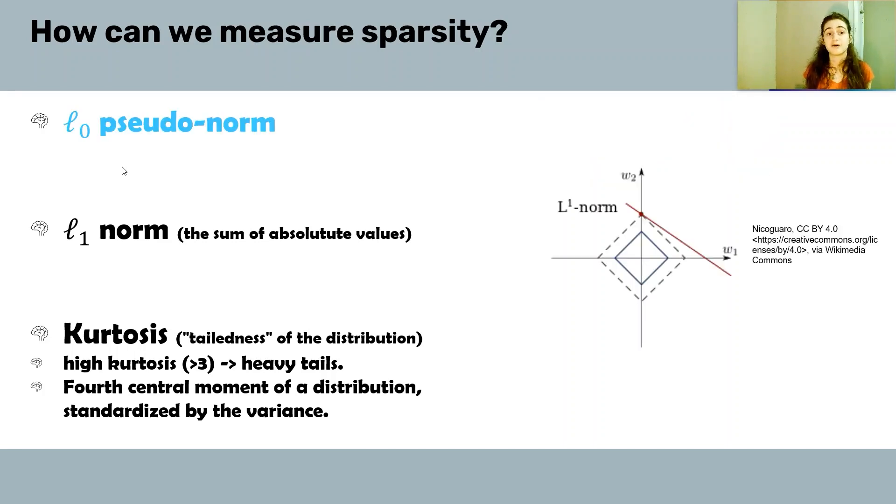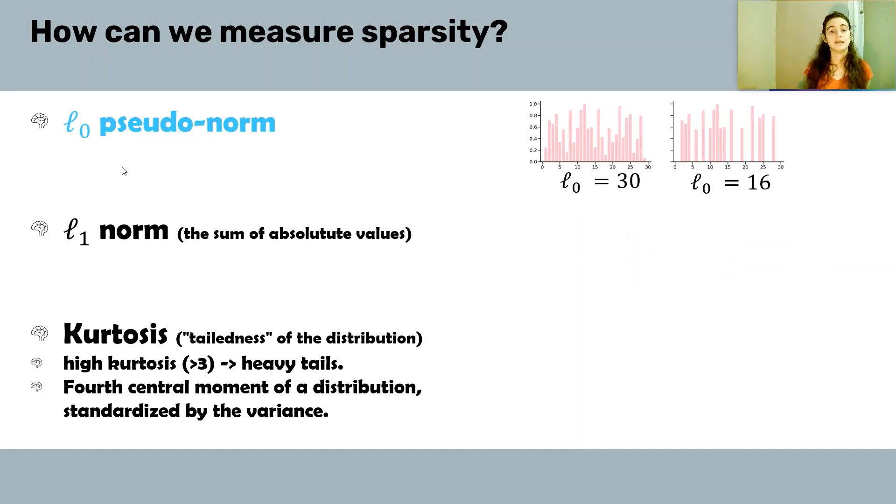The first one is the L0 pseudo-norm. The L0 pseudo-norm basically captures how many non-zero elements a signal includes. For instance, here we have 30 non-zero elements, here we have 16, and this signal is, of course, sparser.